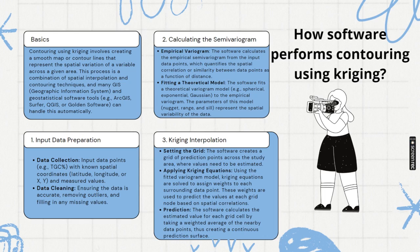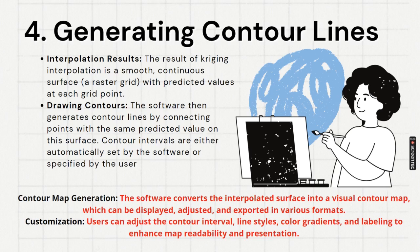Then fit a theoretical model like spherical, exponential, Gaussian. Most of the time spherical variogram is very much popular and most widely used. And then kriging interpolation software does: setting the grid, applying kriging equation, then prediction. And afterwards interpolation of the results. Then draw the contour.